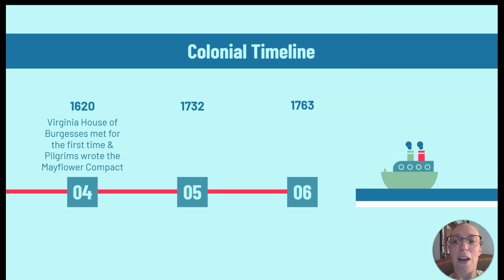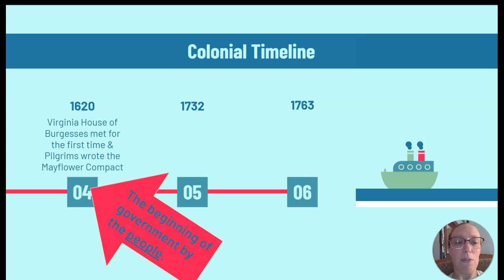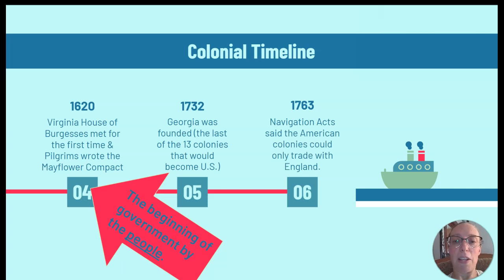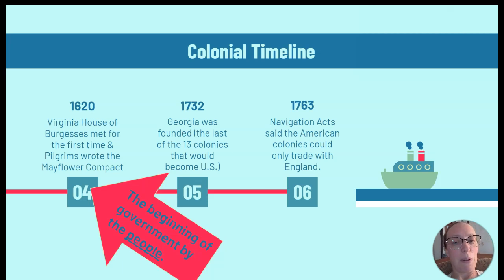For the next 100 years, other colonies were started until in 1732 Georgia was founded — the last of the 13 colonies that would become the United States. 50 years later, the colonies would be independent, starting with the conflicts after the Navigation Acts in 1763. The Navigation Acts said the American colonies could only trade with England, which caused people concerned about their political rights to push back, and so began the conflict of the American Revolution.